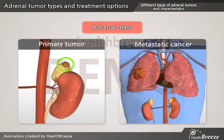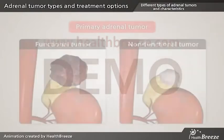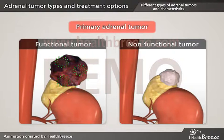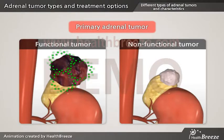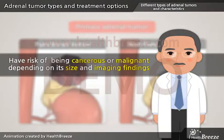Adrenal mass may represent a primary tumor arising from adrenal tissue, or a secondary tumor that has spread from other parts of the body from a metastatic cancer. Primary adrenal tumors can be further distinguished as functional versus non-functional based on whether they produce any hormones. Both functional and non-functional adrenal tumors carry a risk of being cancerous or malignant, depending on size and imaging findings.